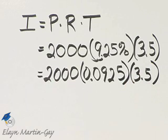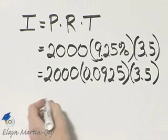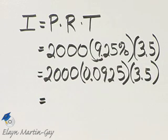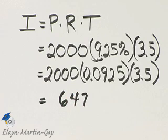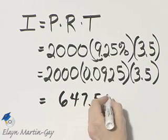That's the same as three and a half for three and a half years. If you multiply, and you'll need to go off to the side to do that, you'll find that your result is 647 decimal point five zero.